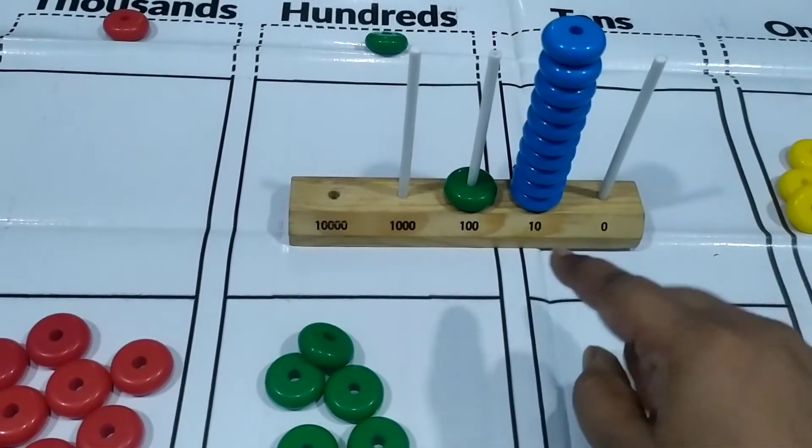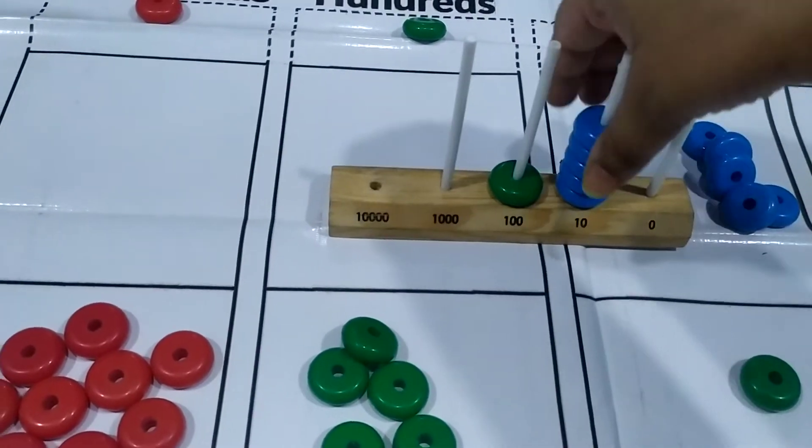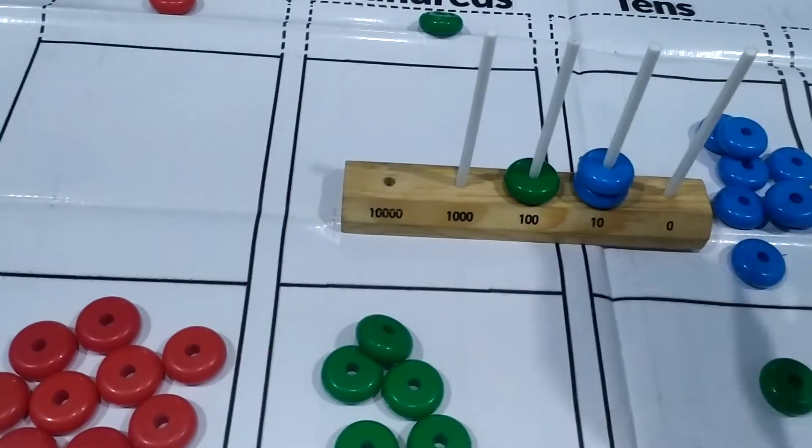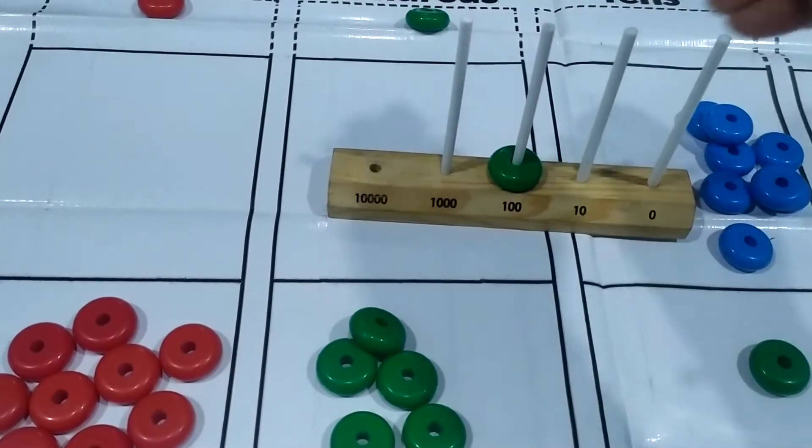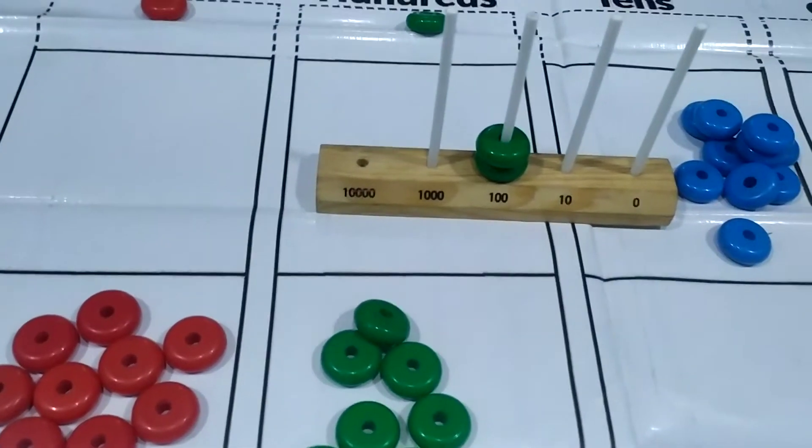So when again a hundred is formed, we will replace all of these and we will put up a hundred again. So here we go with another hundred. That makes it two hundred.